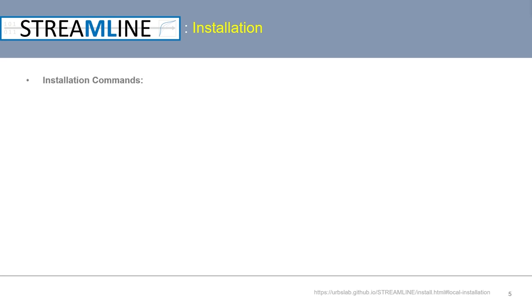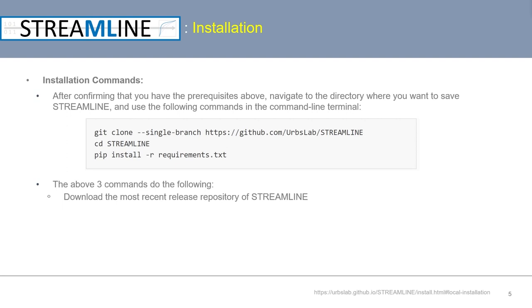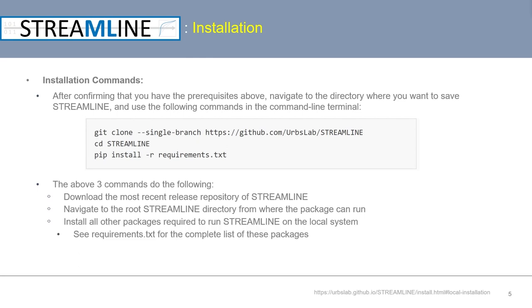Moving on to the installation of Streamline itself, after confirming you have the prerequisites of Git and Anaconda 3, navigate to the directory where you want to save Streamline and use the following commands in the terminal one at a time. These three commands will download the most recent release of Streamline from the GitHub repository, navigate to the Streamline directory, and install all other required packages. To see a full listing of installed packages, check the file requirements.txt in the Streamline repository on GitHub.